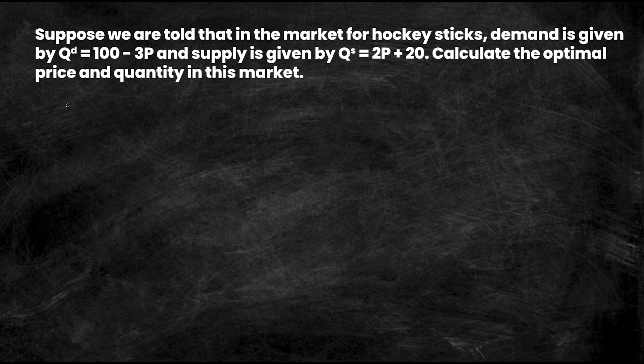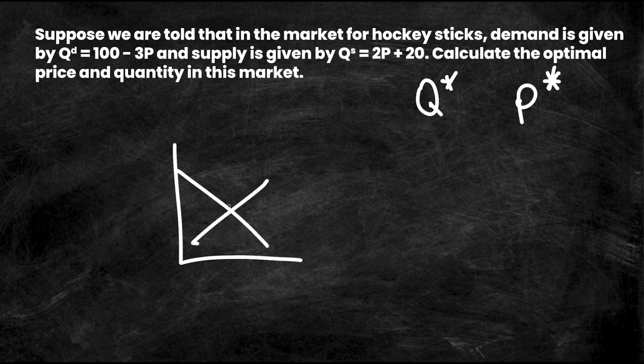Now remember that optimal price and quantity is Q star and P star. This is where the supply and demand curves actually intersect at this point of equilibrium right here. Now you guys already know that, but what we're going to do is take a look at how we can use this and this to calculate that. So let's clean up the frame and we're going to get right into it.